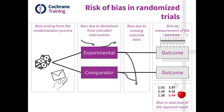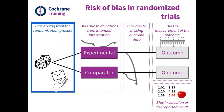Empirical research and theory indicate that these are the components likely to have an important impact on study results, leading to inaccurate estimates of the effect of intervention. In this session we will be covering bias arising from the randomisation process, and there are other sessions which will go through the other domains in detail.